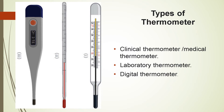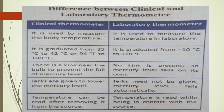The laboratory thermometer is used in laboratories and its temperature range is from −20°C up to 110°C. It is a longer tube compared to the clinical thermometer, which is smaller and has a very narrow temperature range mainly used to find the body temperature of a patient.